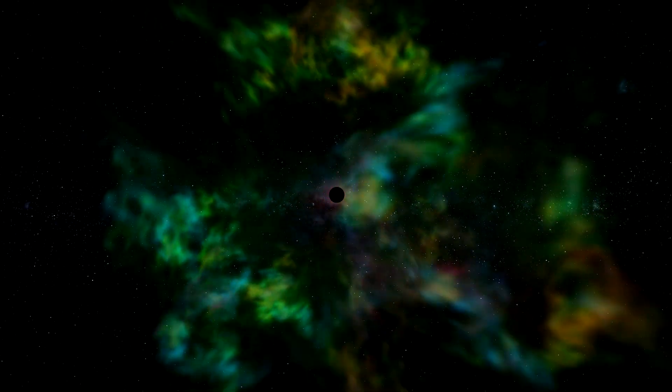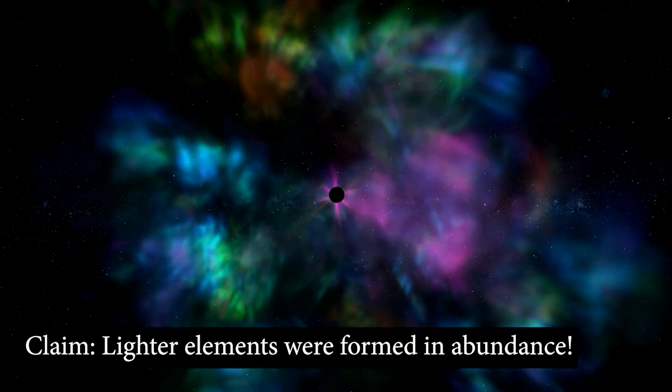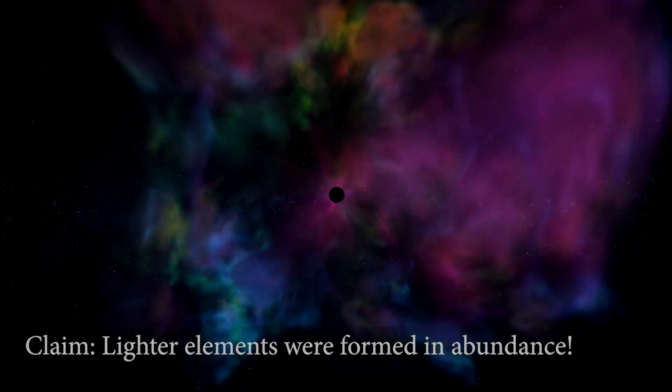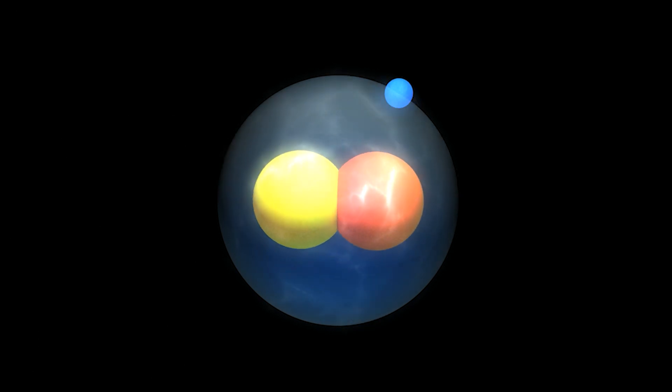Big Bang theory states that lighter elements, such as hydrogen and helium, were formed in large quantities after the explosion. It was easy for single or double protons and neutrons to bump into each other and sometimes even stick together, forming the nucleus of an atom.